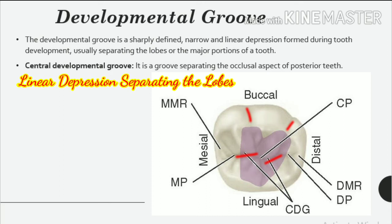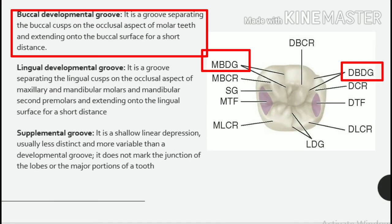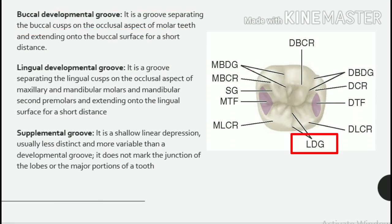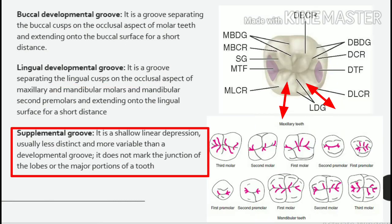Central developmental groove: it is a groove separating the occlusal aspect of posterior teeth. Buccal developmental groove: it is a groove separating the buccal cusps on the occlusal aspect of molar teeth and extending onto the buccal surface for a short distance. Lingual developmental groove: it is a groove separating the lingual cusps on the occlusal aspect of maxillary and mandibular molars and mandibular second premolars, extending onto the lingual surface for a short distance. Supplemental groove: it is a shallow linear depression, usually less distinct and more variable than a developmental groove, and does not mark the junction of the lobes or the major portions of a tooth.